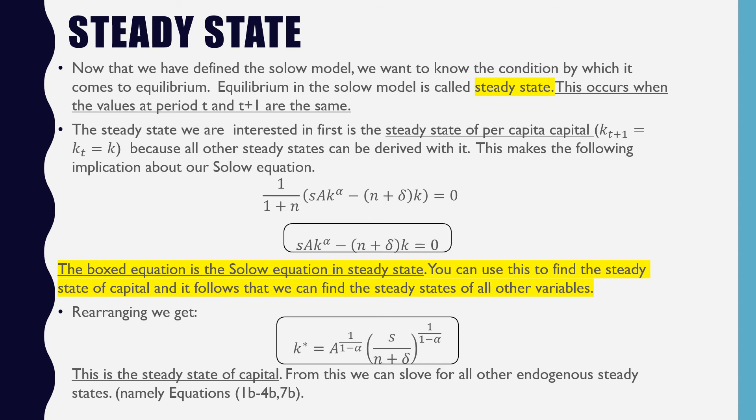We can pull out that first term, which is 1 over 1 plus N, and get our investment per capita minus N plus delta times K, and that equals 0. That boxed equation is the Solow equation in steady state.